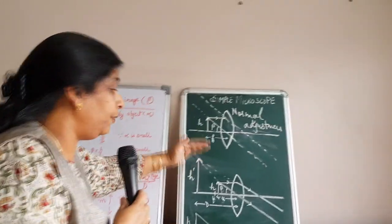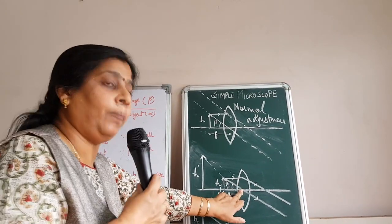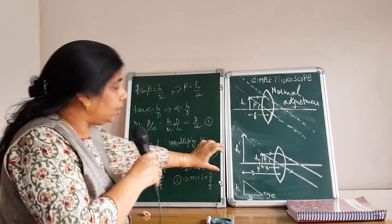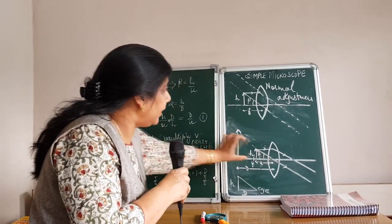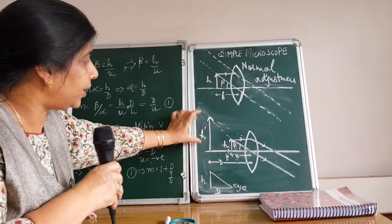We come to the second position where the object is kept between focus and optical center of the convex lens. The object is between F and optical center. The image is formed at least distance of distinct vision. The height of the image is H dash.